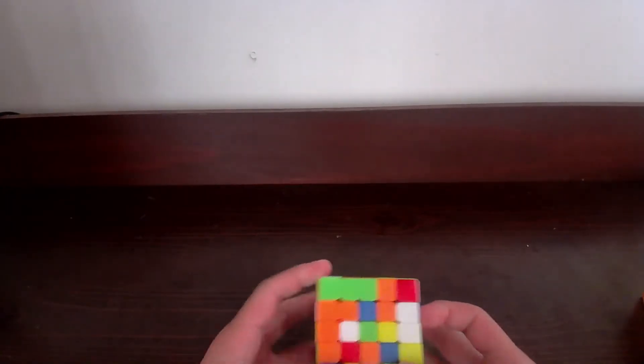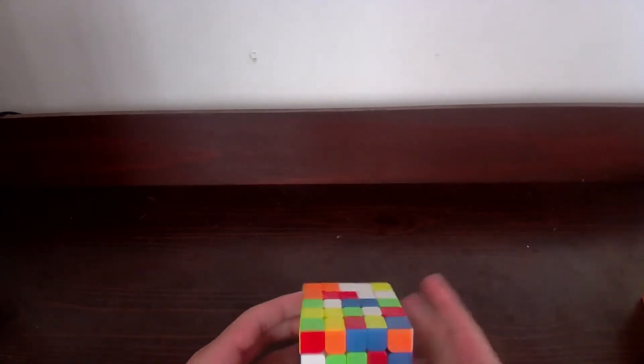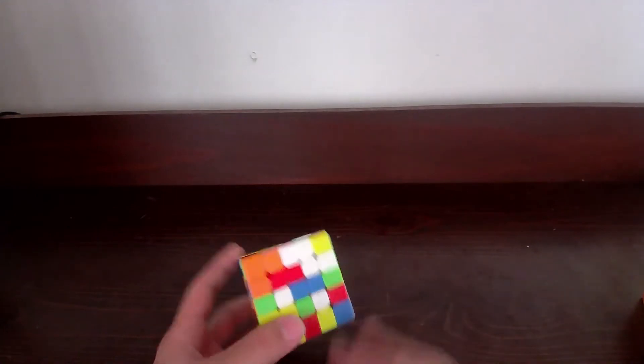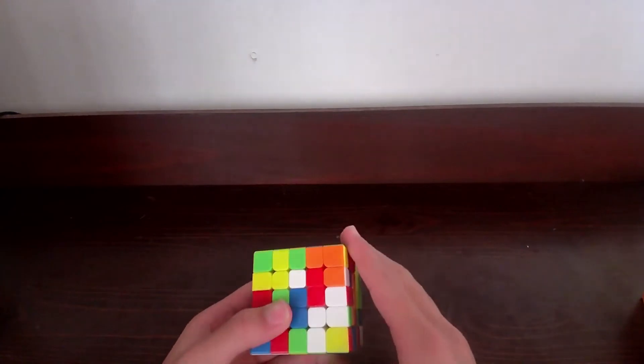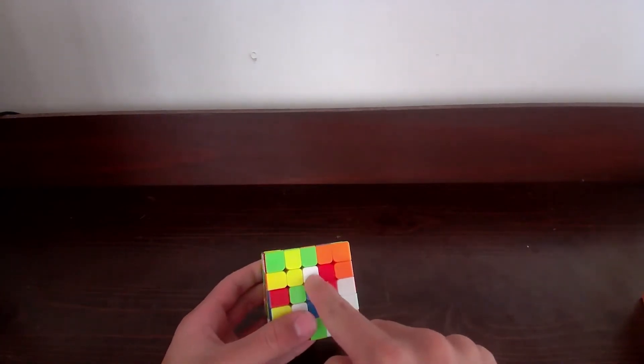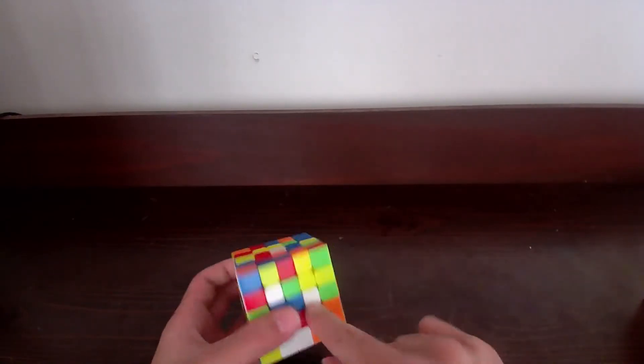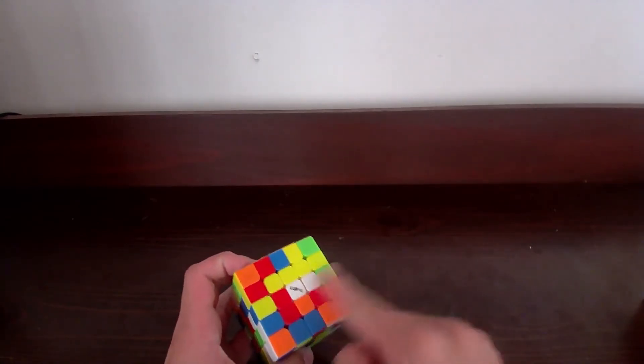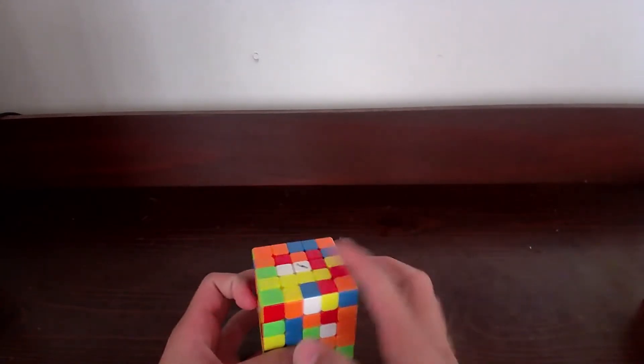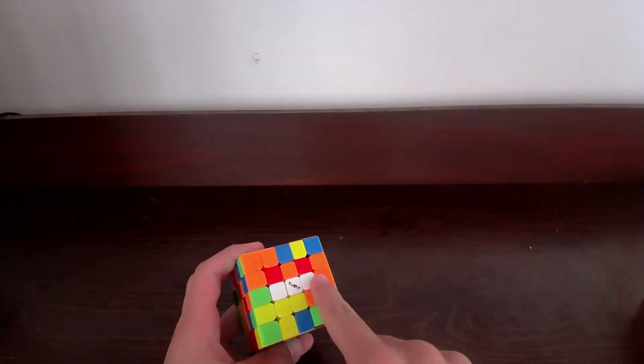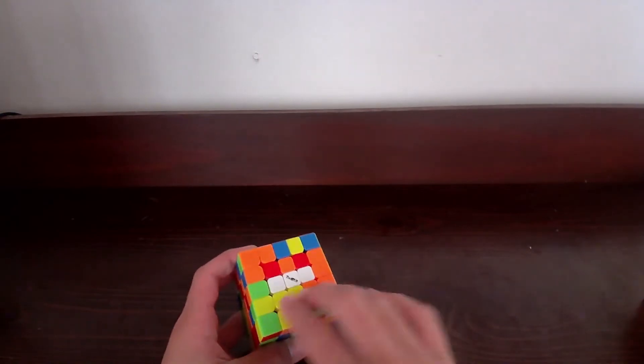So the way we start out is by making the white center, or if you're color neutral and you want to challenge yourself, you can start with any color center, but I will just start with white for simplicity. So the first thing we're going to do is make the white center bar. This is an edge center that can go right here if I turn the front face and move it up.